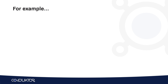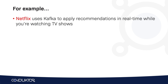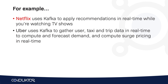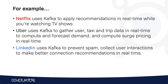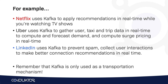Here are some examples of how Kafka is being used around the world. Netflix uses Kafka to apply recommendations in real time while you're watching TV shows. Uber uses Kafka to gather taxi, user, and trip data in real time, and uses it to compute and forecast demand — thanks to this information, they can compute surge pricing in real time to know how much to charge you for a ride when there is high demand. LinkedIn uses Kafka to prevent spam and collect user interactions to make better connection recommendations in real time. Remember that Kafka is here only as a transportation mechanism — it is the big pipeline in the middle that allows your data to flow from your source systems to your target systems in real time.